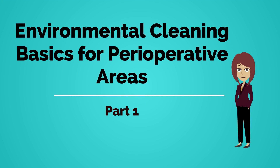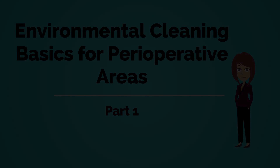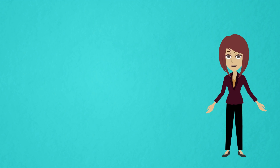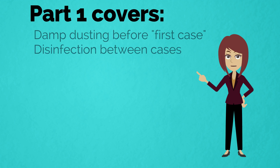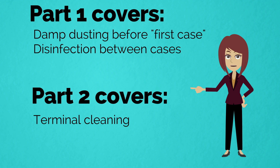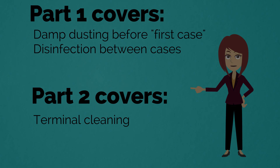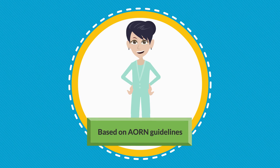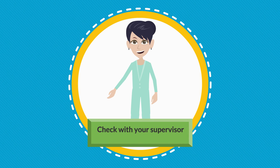Welcome to Environmental Cleaning Basics for Perioperative Areas Part 1. This two-part series covers perioperative environmental infection control practices. Part 1 covers damp dusting prior to starting the first case and cleaning disinfection at the end of each case, and Part 2 focuses on terminal cleaning. Recommended practices are based on current Association for Perioperative Registered Nurses guidelines. Check with your supervisor if your facility policy differs from the video instructions.